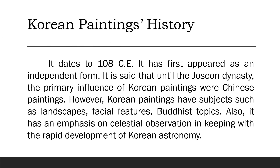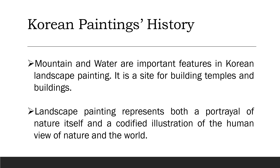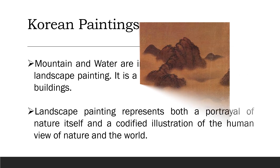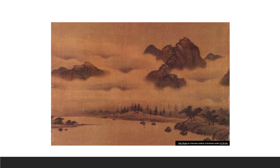Korean Paintings History: It dates to 108 CE and first appeared as an independent form. Until the Joseon Dynasty, the primary influence on Korean paintings was Chinese paintings. However, Korean paintings have subjects such as landscapes, facial features, and Buddhist topics. It also has emphasis on celestial observation, keeping with the rapid development of Korean astronomy. Mountain and water are important features in Korean landscape painting, serving as sites for building temples. Landscape painting represents both a portrayal of nature and a codified illustration of the human view of the world.